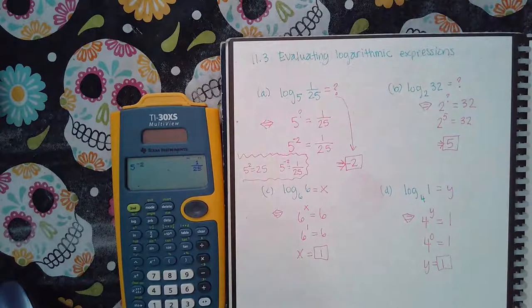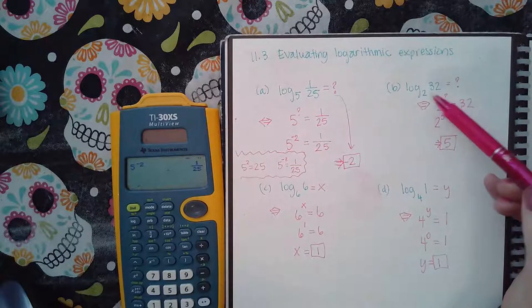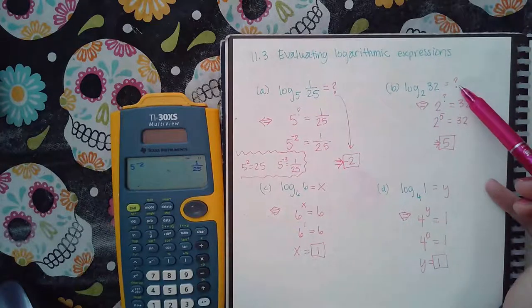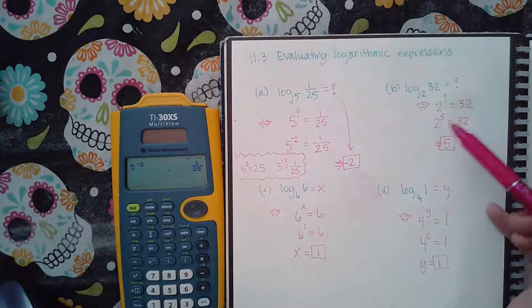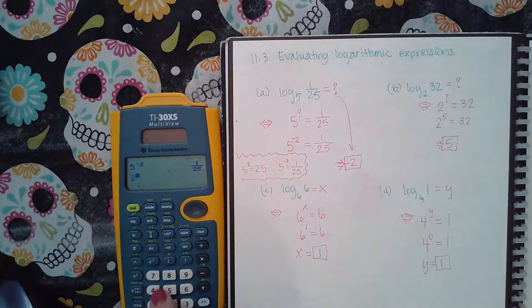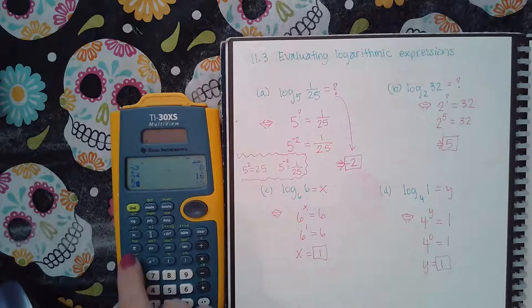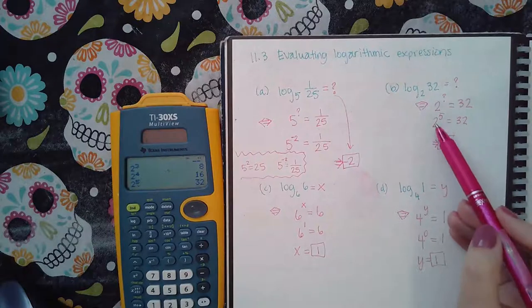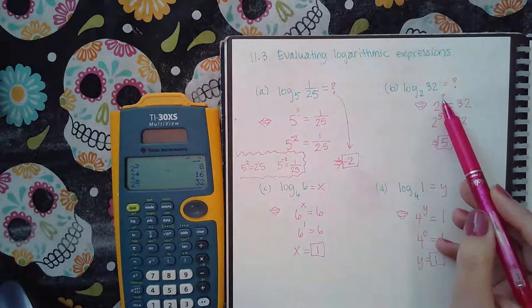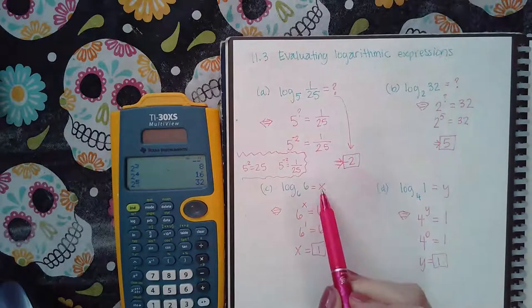Now same thing over here. I put question mark again, so 2 raised to the question mark exponent equal to the argument. And then I used my calculator because I said 2 to the third is too small, 2 to the fourth was too small, and 2 to the fifth was 32. So then I realized that 2 to the fifth power is 32, which means that that exponent that I was looking for is 5.